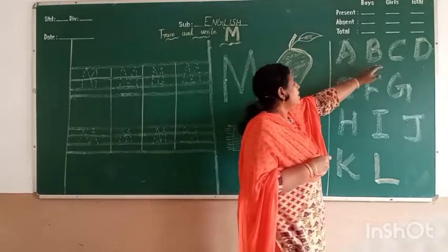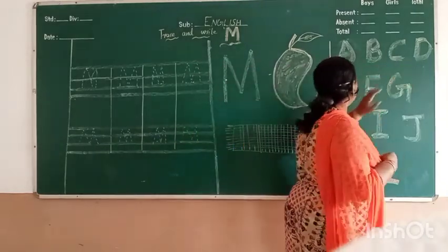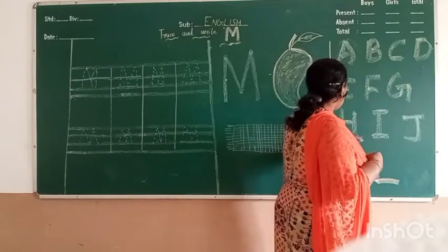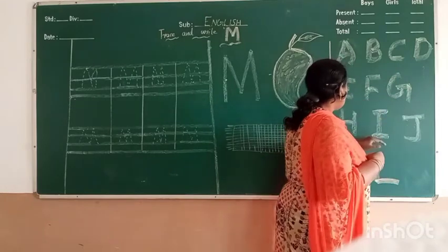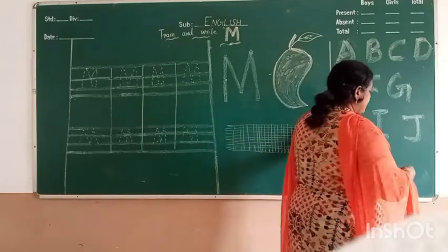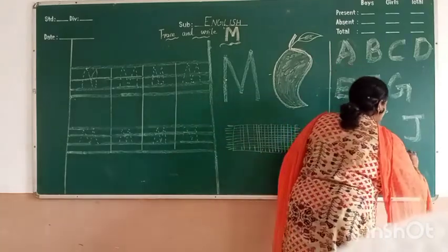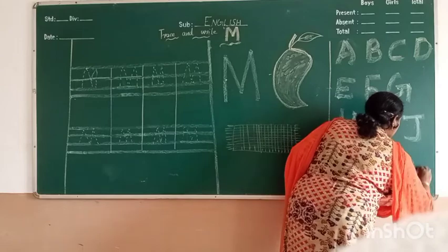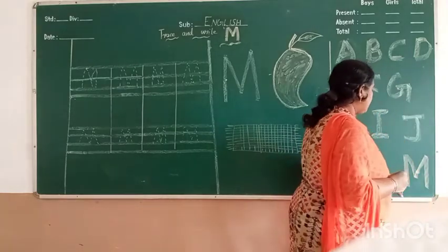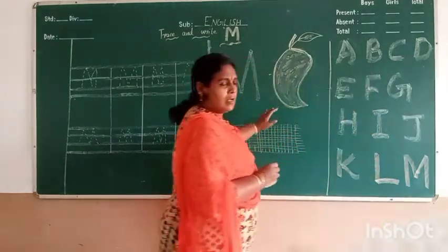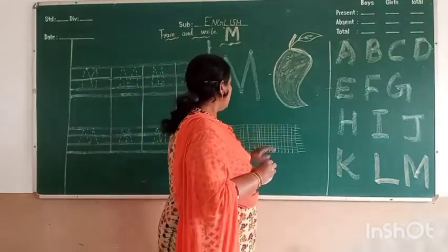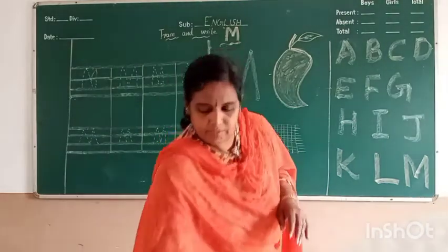A, B, C, D, E, F, G, H, I, J, K, L. The next alphabet is M. M for mango and M for math.